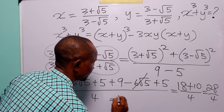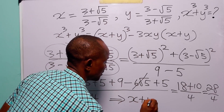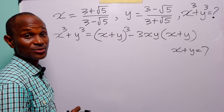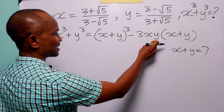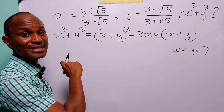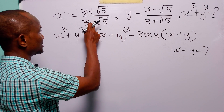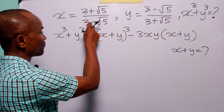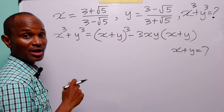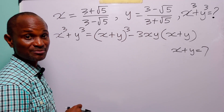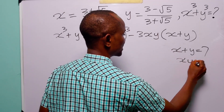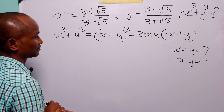28 divided by 4 is equal to 7. So we have that x plus y is equal to 7. The next quantity we need to calculate is x times y. When you look at x and y, you will see that they are reciprocals — x is 3 plus root 5 over 3 minus root 5, and y is 3 minus root 5 over 3 plus root 5. When you multiply reciprocals, you get 1. So x times y is equal to 1.